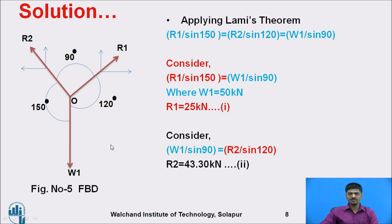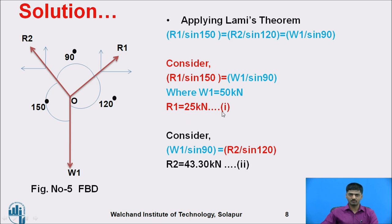Now apply Lamy's theorem. In Lamy's theorem, you consider each force divided by the sine of the angle between the remaining two forces. So: R1 / sin(150°) = R2 / sin(120°) = W / sin(90°). Substituting W equal to 50 kN, calculate R1 from the first equation — that is equation number one. Similarly, equating W / sin(90°) to R2 / sin(120°) and substituting W equal to 50, calculate R2, which equals 43.30 kN. Let's verify these calculations.